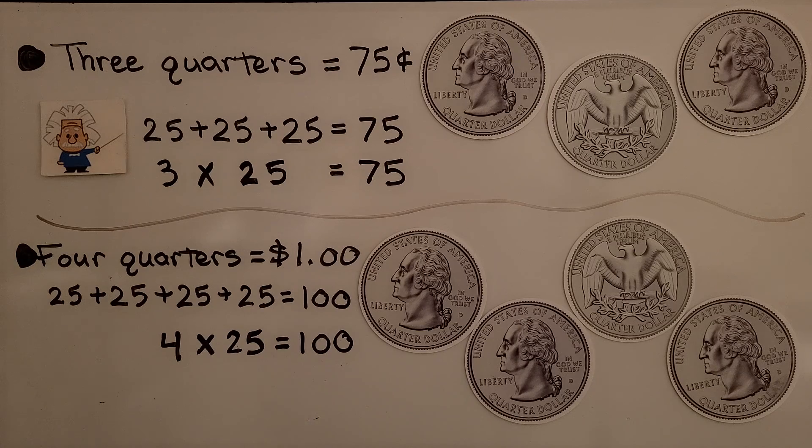Four quarters is equal to one dollar. We have 25 plus 25 plus 25 plus 25, that's going to be equal to 100. Four times 25 is equal to 100.